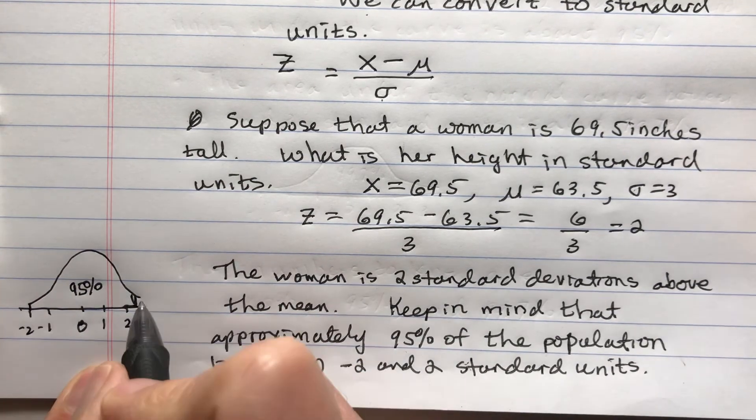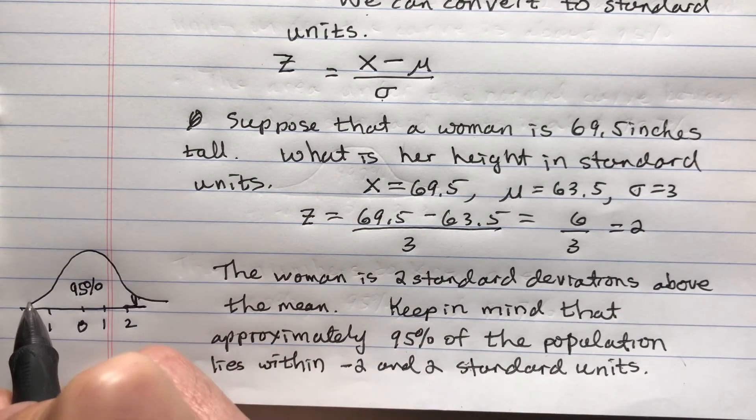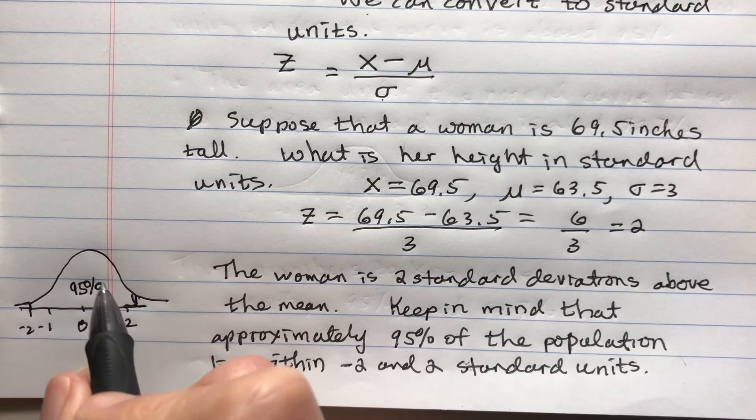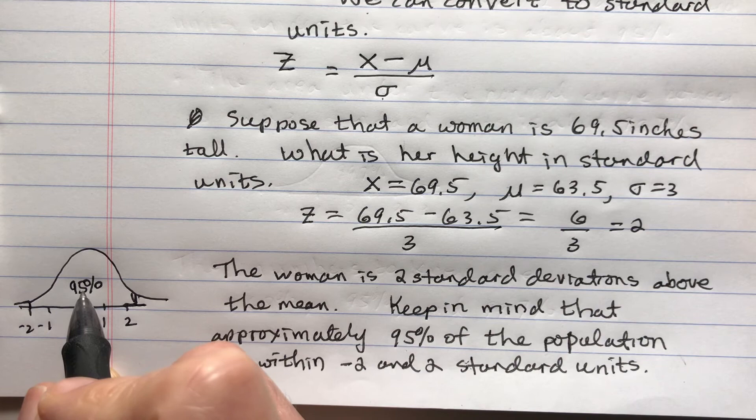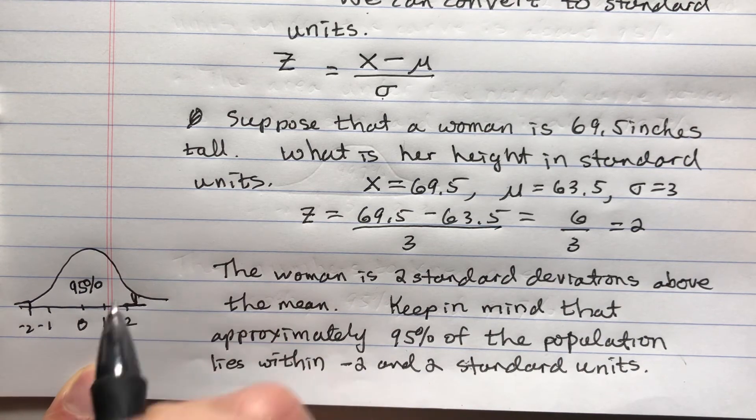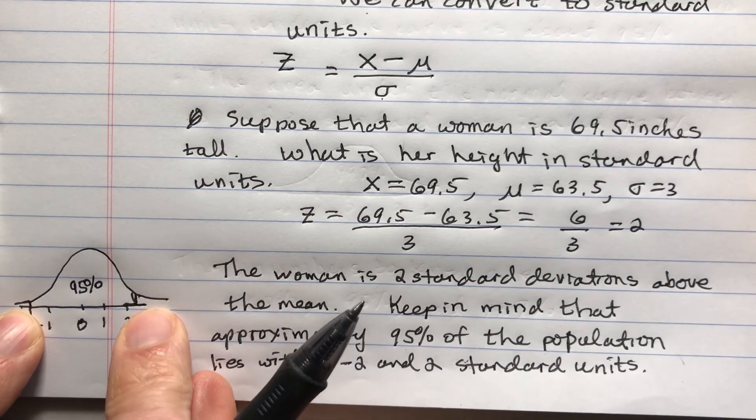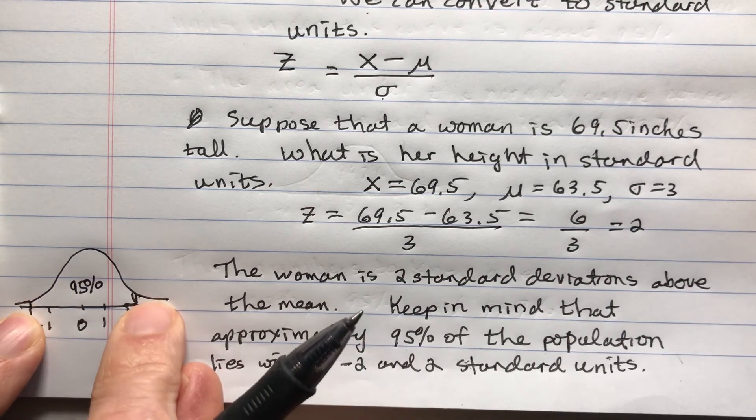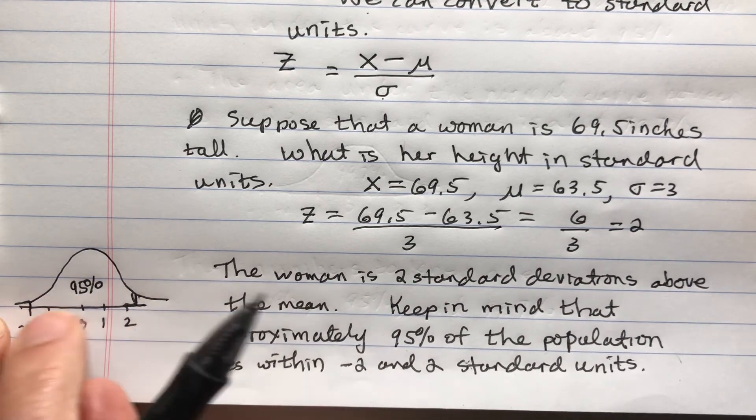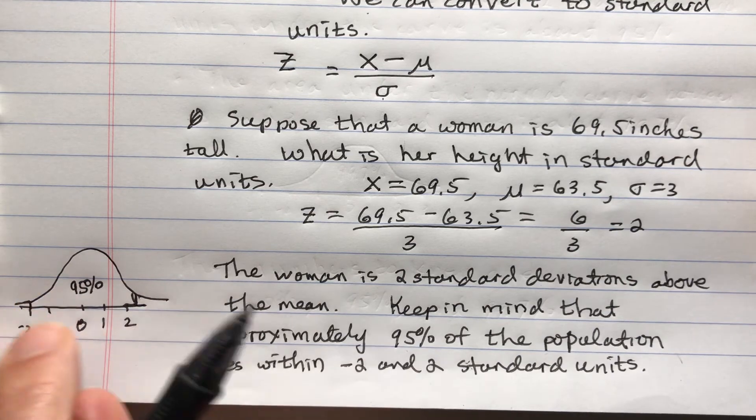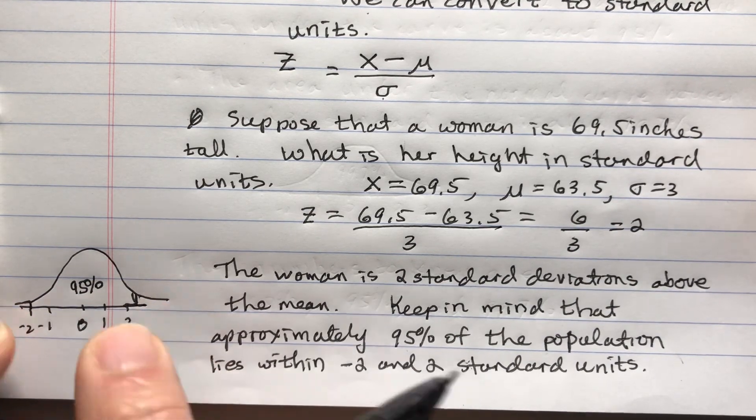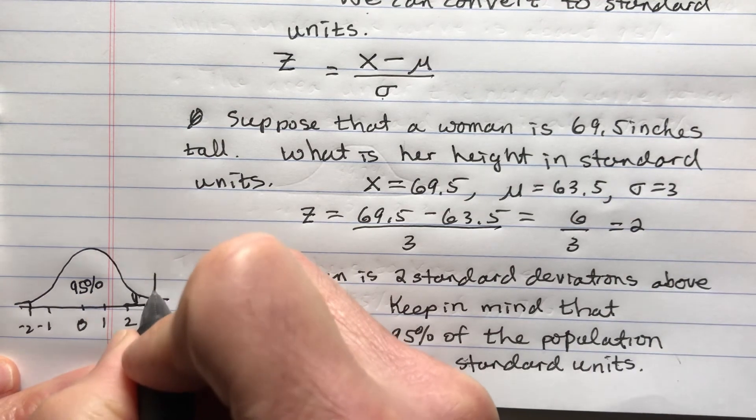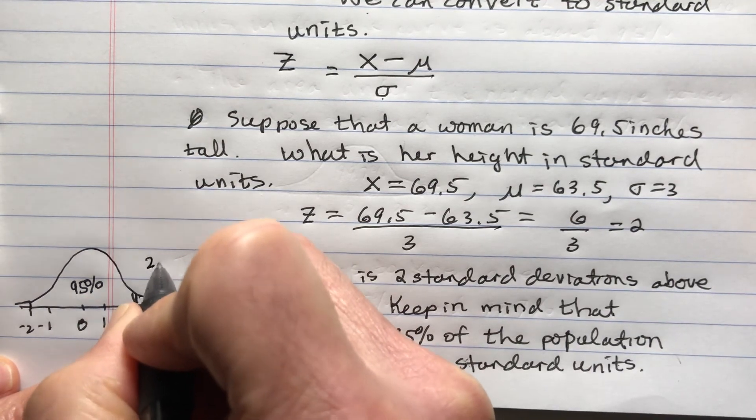This woman is at the edge of that. If you take 95% and take away from 100%, which is the total area, what's left over is 5%. That 5% is in these two tails here. 95% plus 5% makes 100.